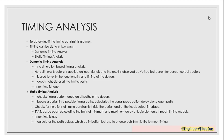Static timing analysis is basically a method of validating the timing performance of a design by checking all possible paths for timing violations. What it does is break a design into certain possible timing paths, then check the propagation delay along each of those paths, and also check whether there are any violations related to timing constraints inside the design or at the input and output interface.